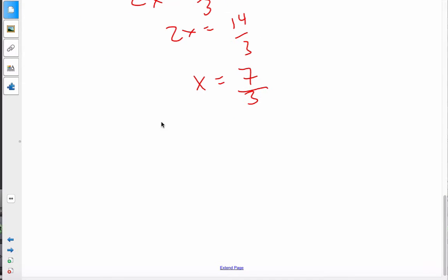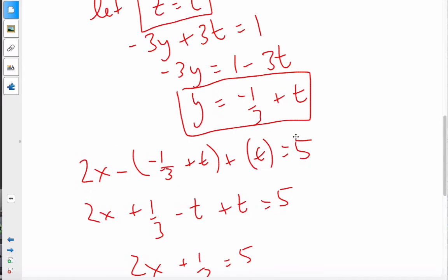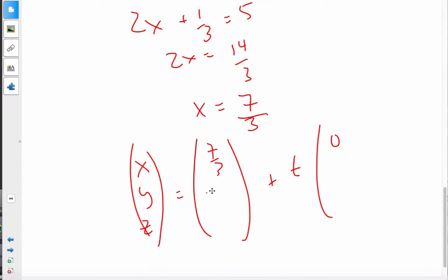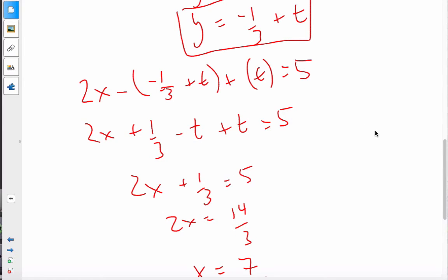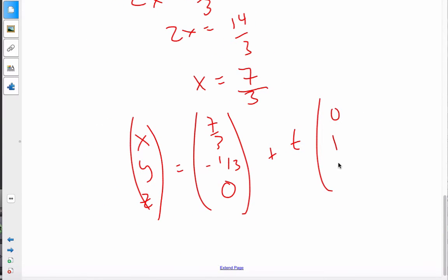And so, what the final equation is going to be is x, y, z is equal to, well, 7 thirds plus t, and this is 0. My y was negative 1 third 1. Negative 1 third 1. And my z was 0, and my z was 0, 0, 1.